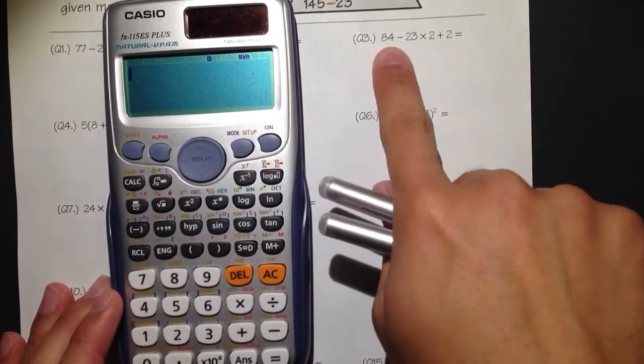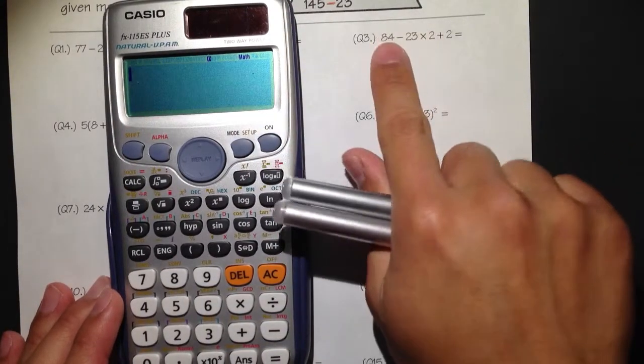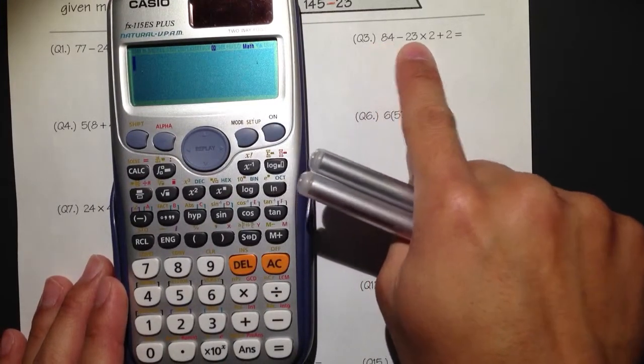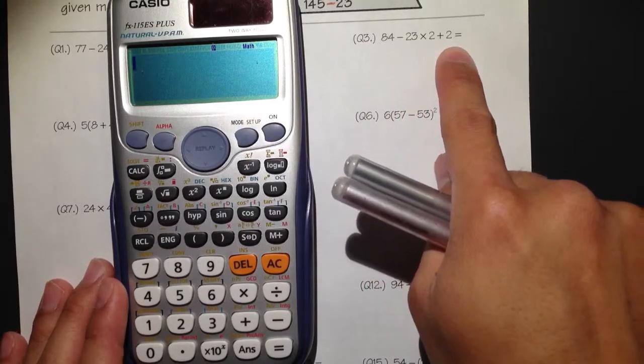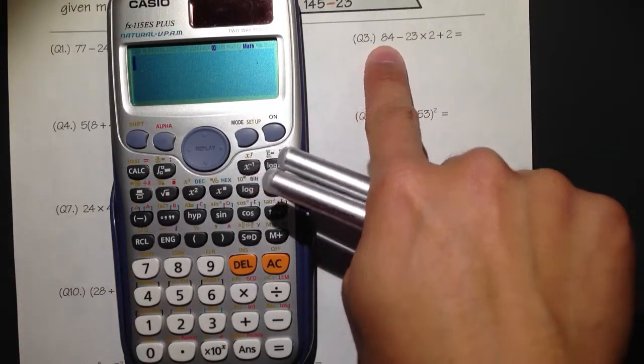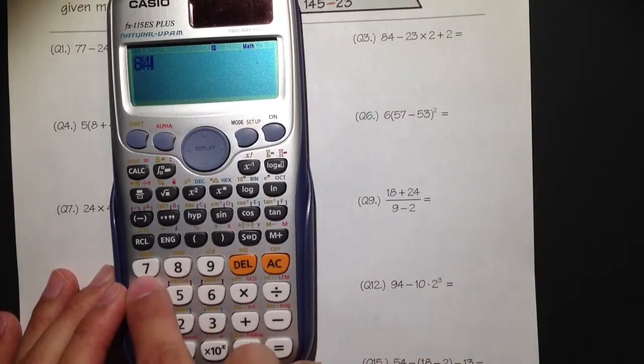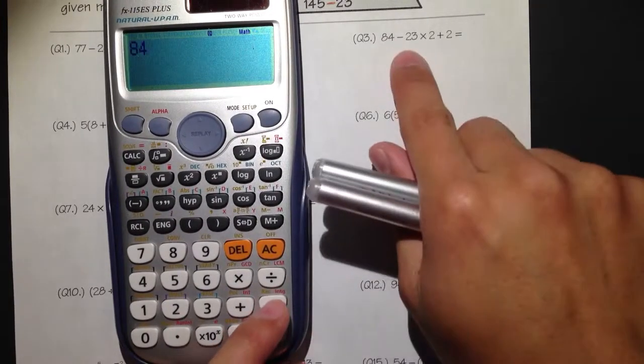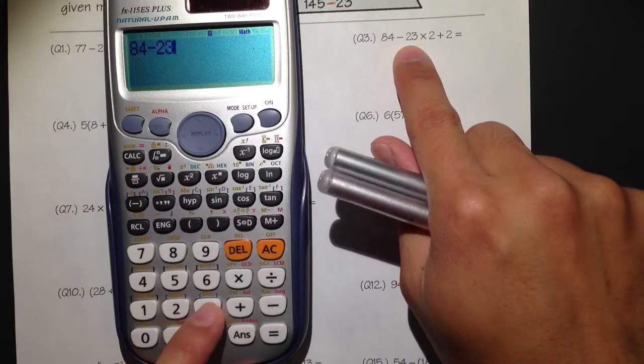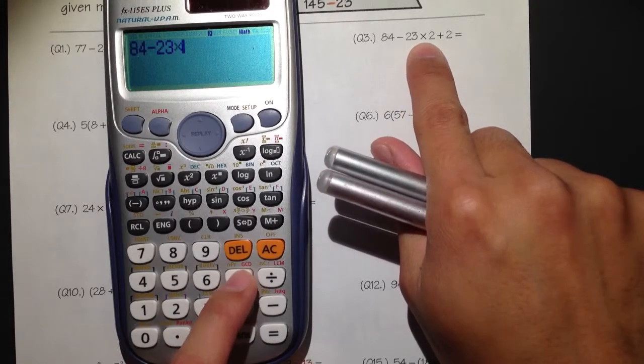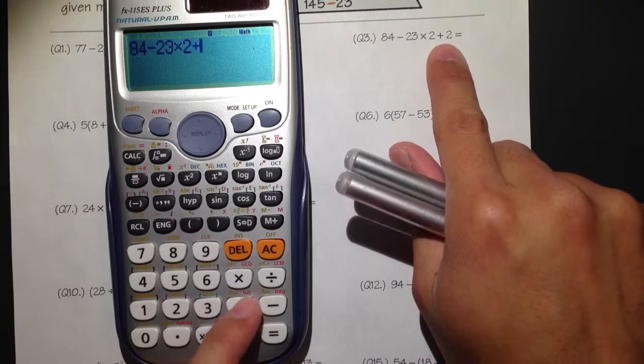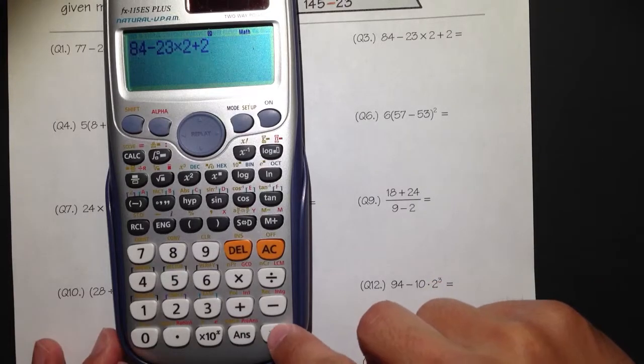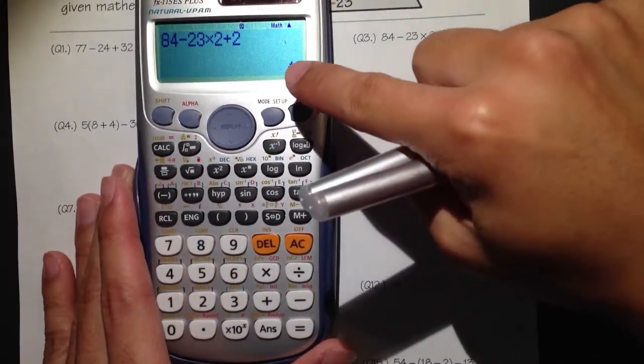Turn on the calculator and let's do a few of these questions. For this question, I have 84 minus 23 times 2 plus 2. You can just enter exactly what you see right here. Start by 84, and then minus - this is the subtraction, this is the minus. Then we have 23, multiply by 2, and then plus 2. Just hit the equal right here. Once you hit the equal, then you'll see that the answer is 40.